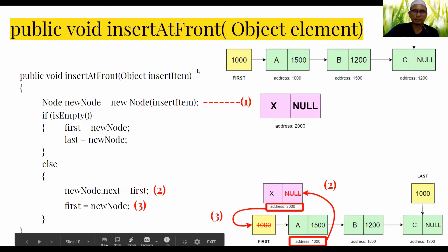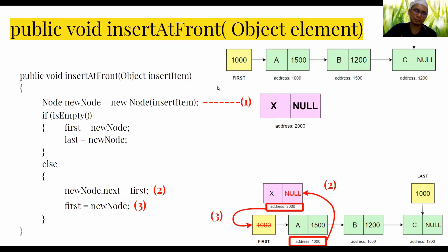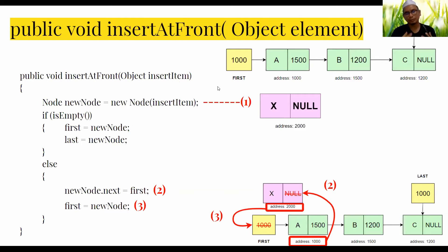The second method is insertAtFront. This method inserts a new node at the front of the list. If there is an existing list, the new node or new data will be placed at the front.